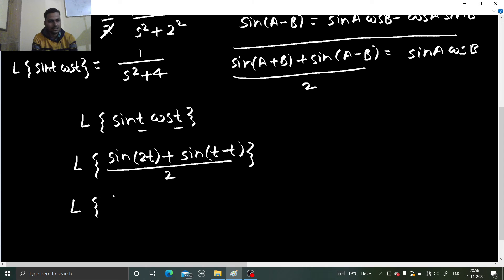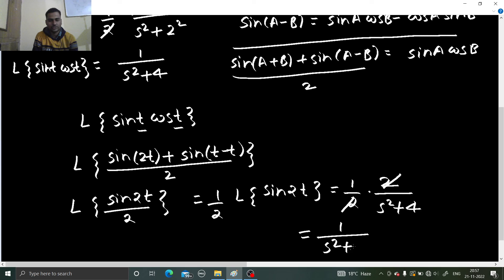So you are getting sin 2t by 2 again here. So half you can take out. You can do this as Laplace of sin 2t, which will again come as 2 divided by s square plus 2 square, which is 4, finally giving you the same answer as it should be.